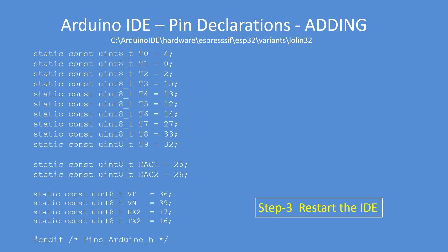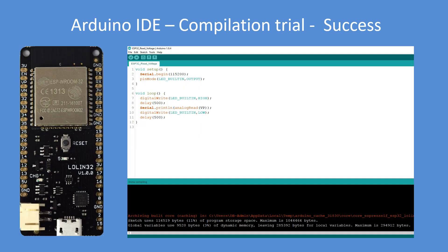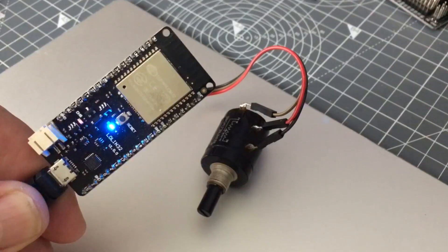Now when I compile the same program again with analog read VP, it compiles correctly. The compiler has used the definition I put in the Arduino pins file and replaced VP with 36. That makes life more convenient for programming.